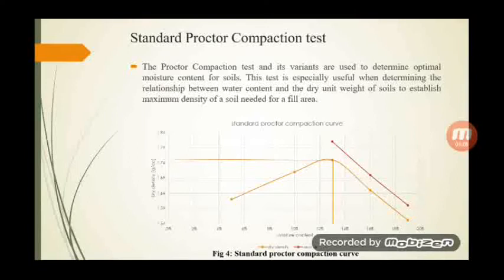The Standard Proctor test is done to determine the maximum dry density and the optimum moisture content of the clay, and the red line indicates the zero air void curve. By performing the Standard Proctor compaction test, we found that our clay has a maximum dry density of 1.75 g/cc at an optimum moisture content of 13%.